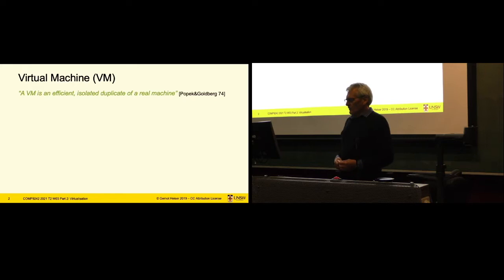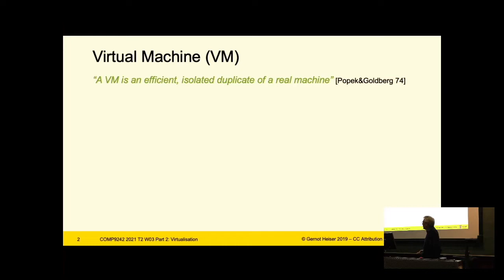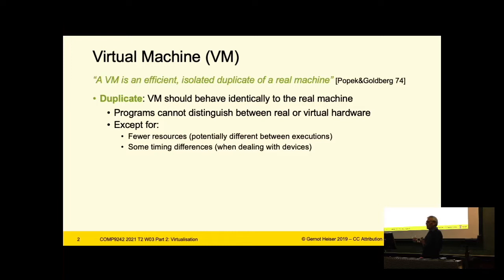What is virtualization? Virtualization is about running things in a virtual machine rather than a physical machine. The classic definition from the Popek and Goldberg paper on virtualization back in the 70s — everything conceptual has been invented in the 60s or 70s, and virtualization is no different, actually older than microkernels. A virtual machine is an efficient, isolated duplicate of a real machine.